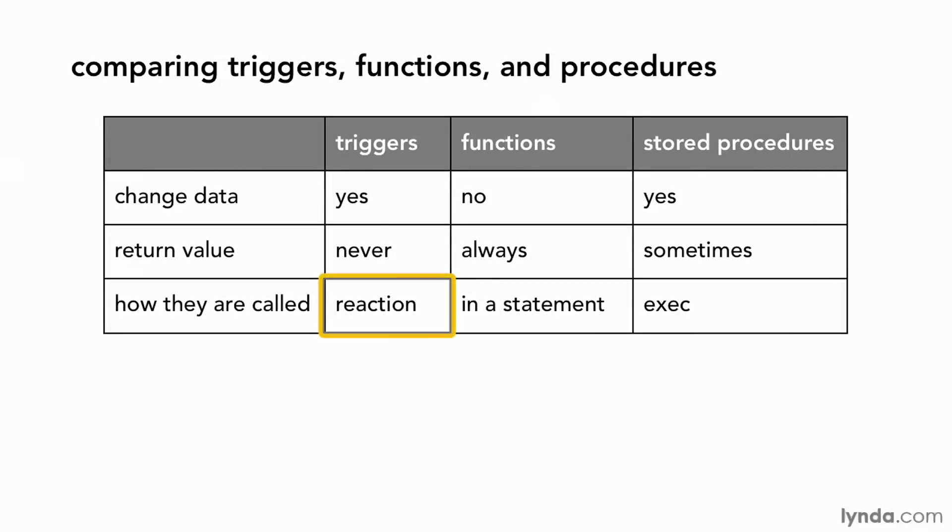Calling triggers is yet again a third technique. There is no way for me to issue a command that causes a trigger and just a trigger to run. A trigger always runs as a reaction to something. So I do something else on my machine, the machine performs that action, and then afterwards runs the trigger.